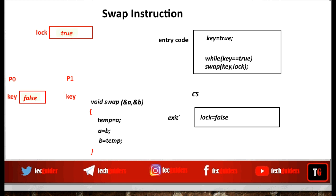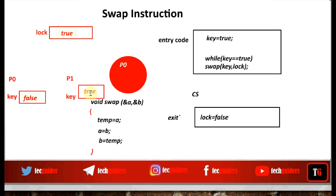Now P0 is inside the critical section. Suppose P1 also needs to enter the critical section — it executes the entry section code by setting key to true. Since key is true, it executes the swap function once. As a result, the true value from lock is transferred to key and the true value from key is transferred to lock. So key receives a true value, and P1 cannot break the while loop. It will keep executing the swap instruction within the while loop as long as key is true, waiting for lock to become false. So P1 cannot enter the critical section.